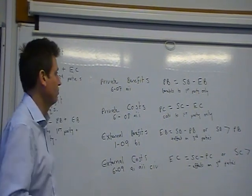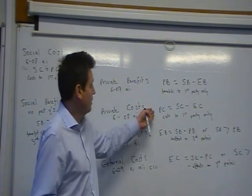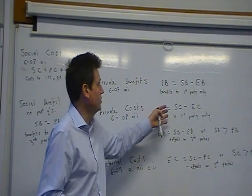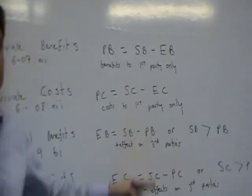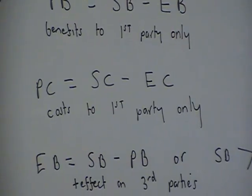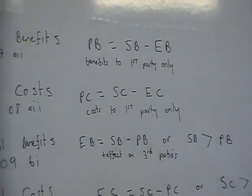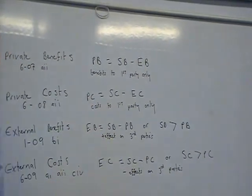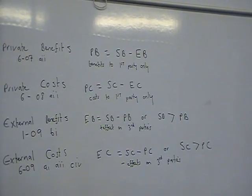The other way of thinking about it is that private costs is equal to social costs minus external costs. This will become clearer later as I explain all of them together. So don't forget, it's cost to the first party or cost to the individual concerned.